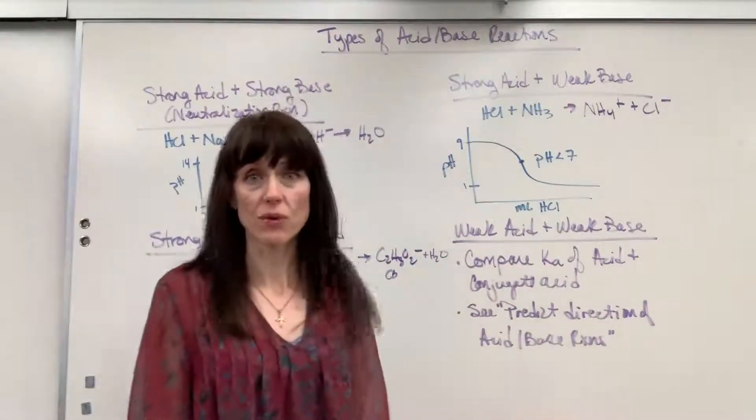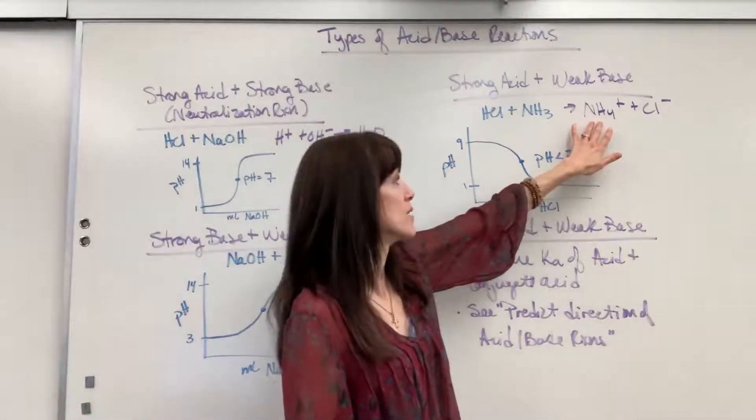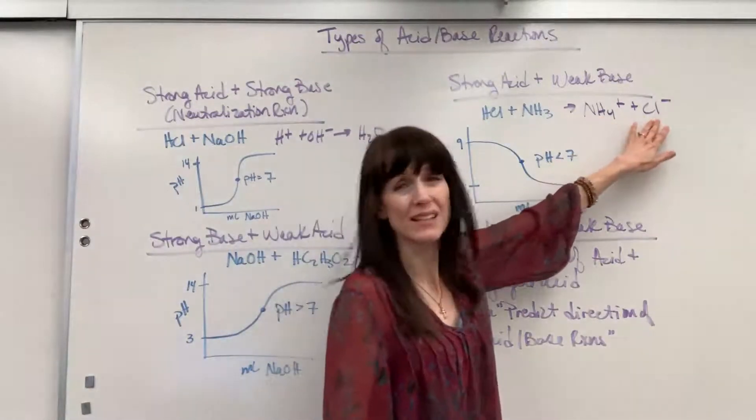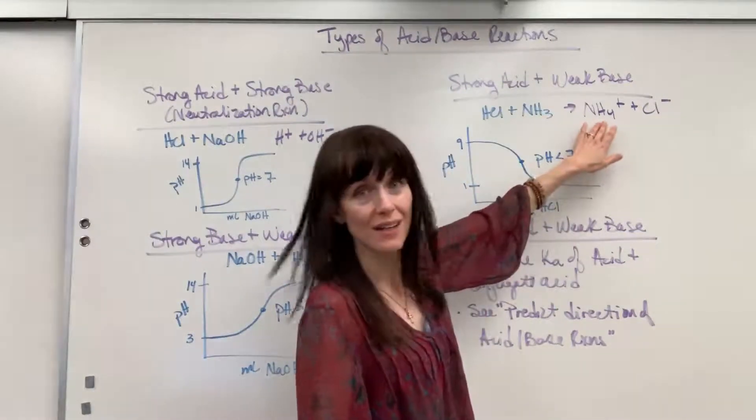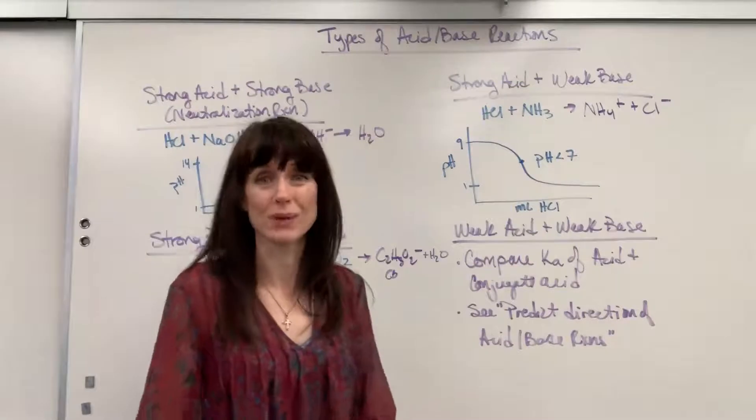Well, in the water solution, you're going to have the ammonium ion floating, and the chloride. Well, the chloride is neutral. It's not going to impact pH. But this right here is a weak acid. So that's what pulls that pH below a 7.